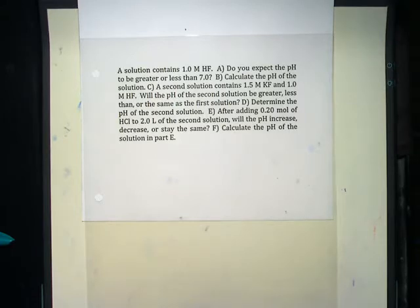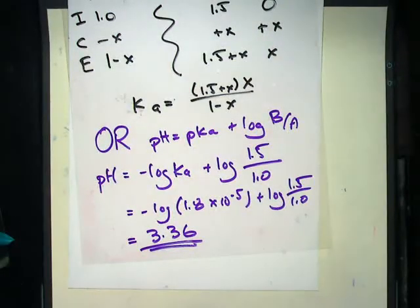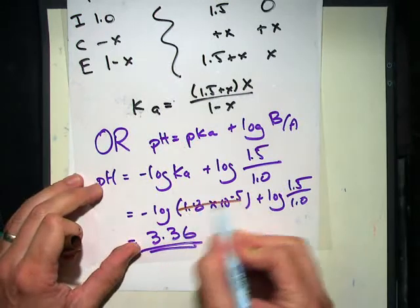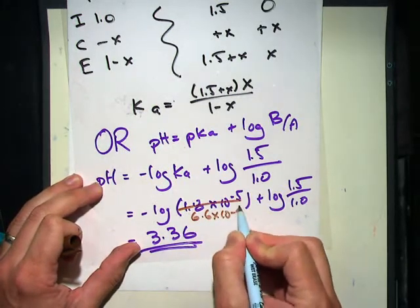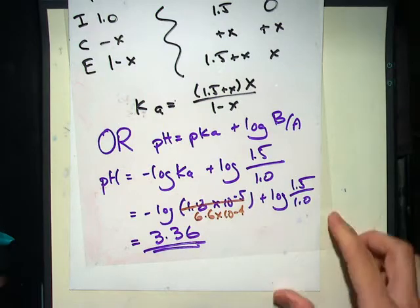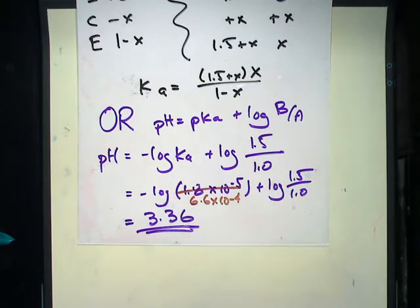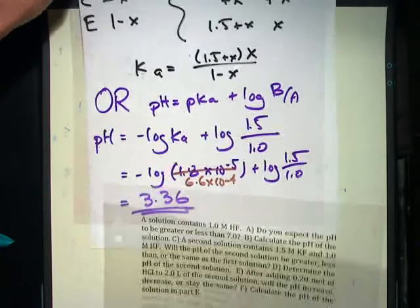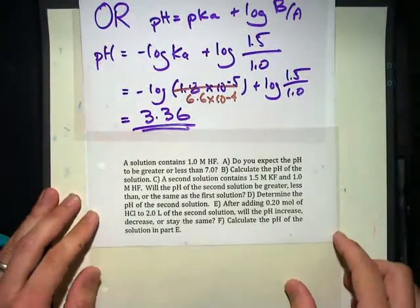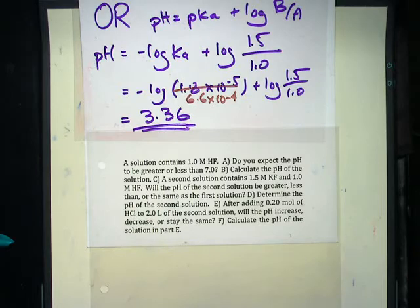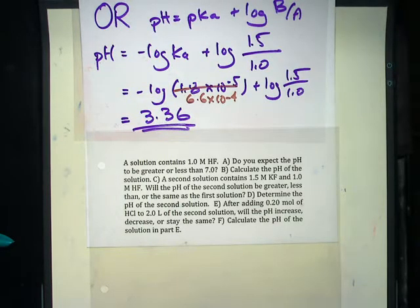Part E: I'm going to add 0.2 moles of HCl to 2 liters of the second solution. Will the pH increase, decrease, or stay the same? If I'm adding an acid, it better go down. So I'm expecting it to be less than 3.36. And actually, I'm going to expect it to be greater than the original 1.59, because a buffer resists pH change. So I'm adding an acid to a buffer and I expect it to go down, but very little.